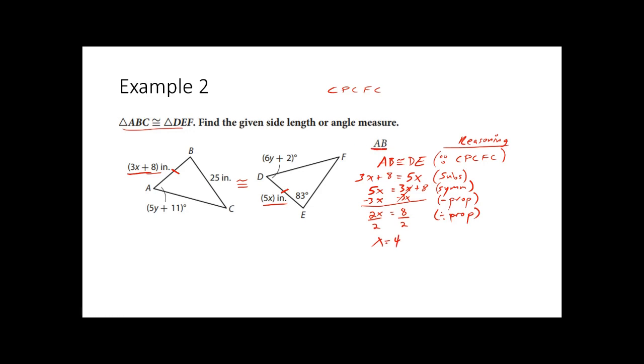Now, is that what they were asking for? No. They were asking for the length of AB. So let's go ahead and plug it back in for AB. So it's going to be 3X plus 8. And of course, this is going to be in inches. So let's go ahead and substitute. But X is 4. So we're going to substitute. 3 times 4 is 12. 12 plus 8 is 20 inches. So AB will be 20 inches. And if you double check over here for DE, 5X, X is 4. How about that? You also get 20 inches. See? They are congruent.